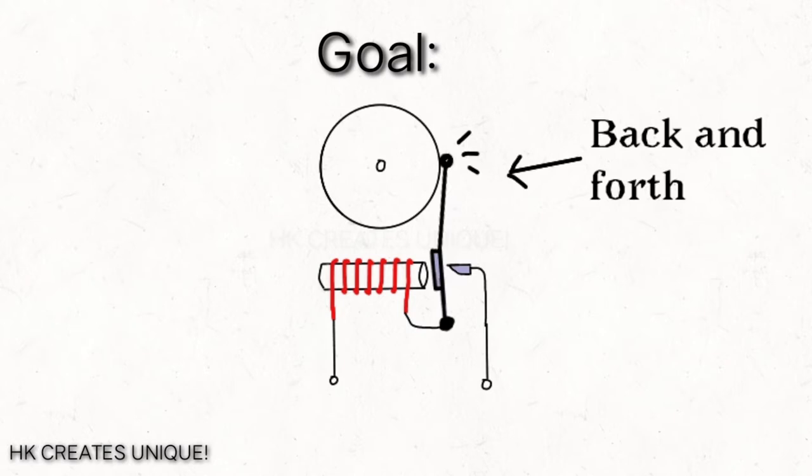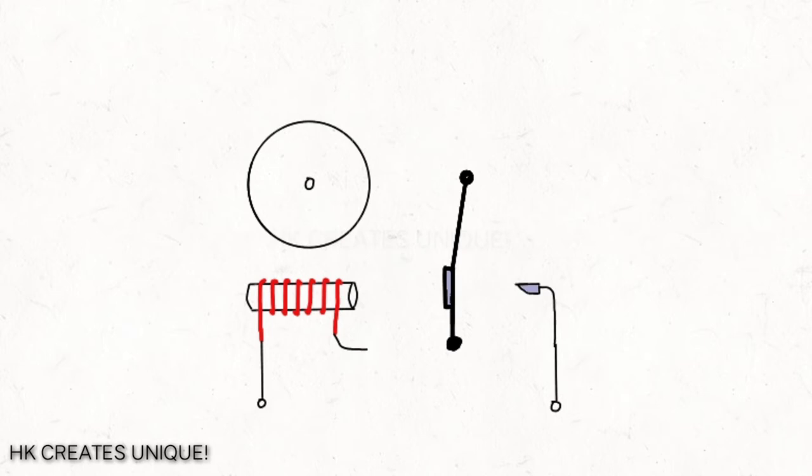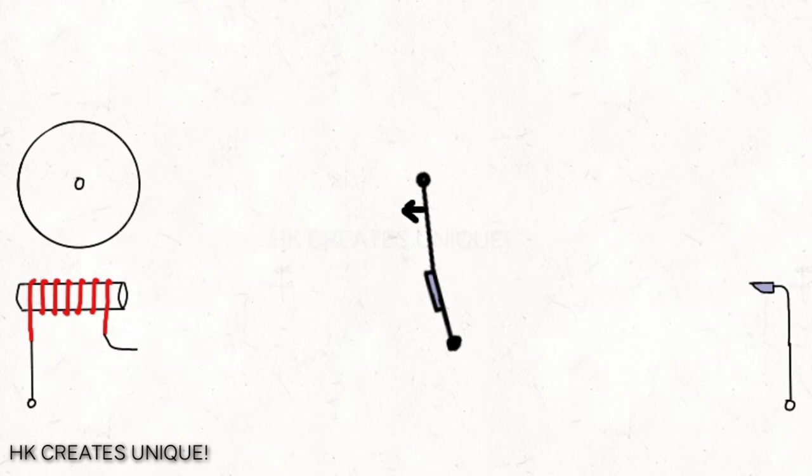So we need a mechanical thing that makes the striker move back and forth. Also note that the striker acts like a spring, so if you pull the striker like this and release it, it goes to the original position.